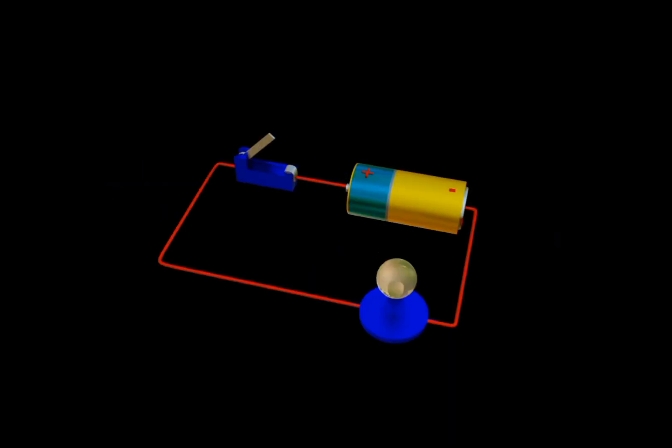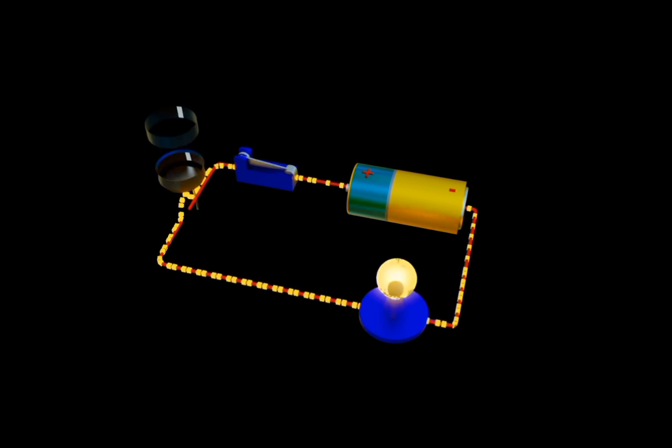When we use the same circuit and add a capacitor to the circuit and it gets charged when the circuit is closed, removing the battery from the circuit.